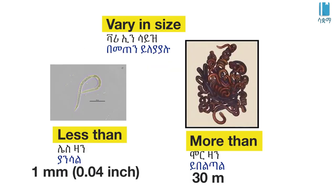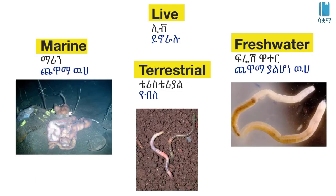Worms vary greatly in size — some are very small, measured in millimeters, while others can reach several meters in length.